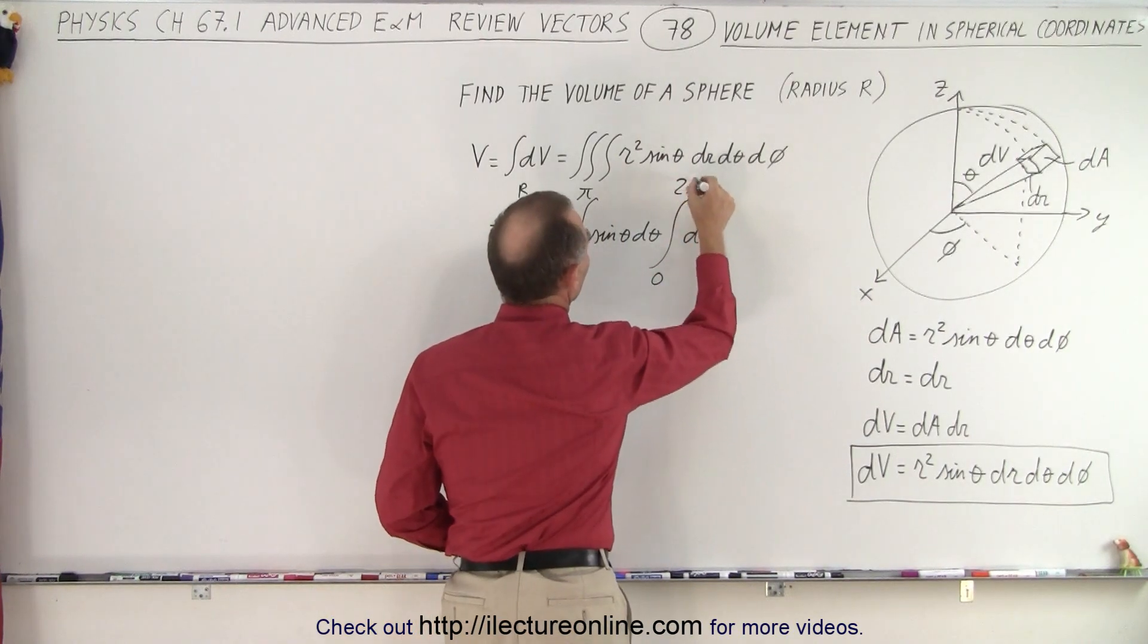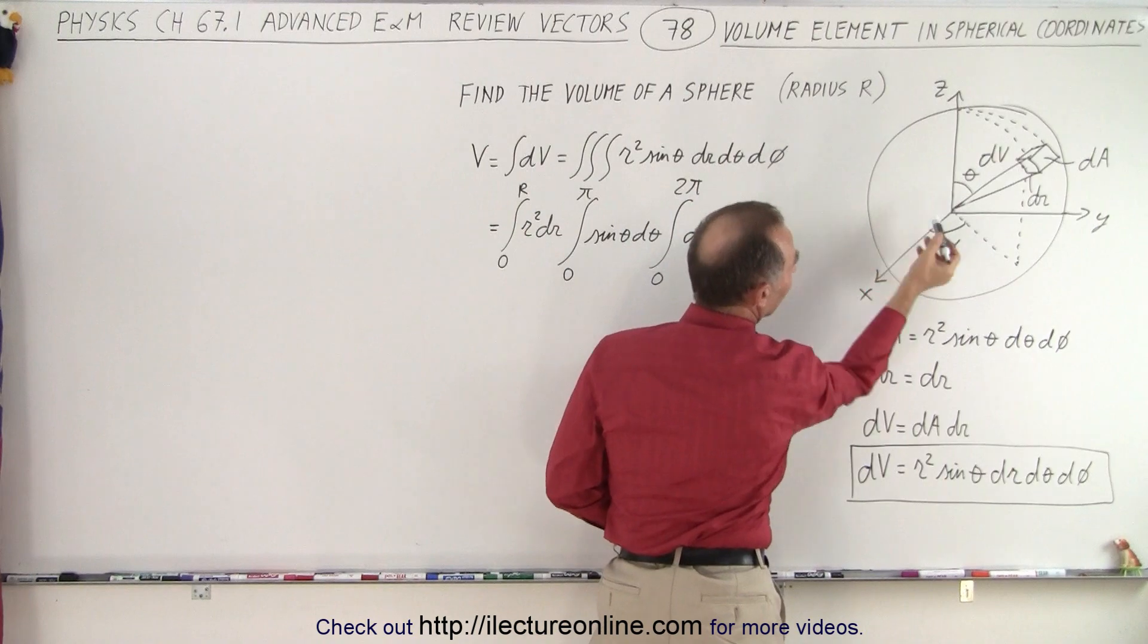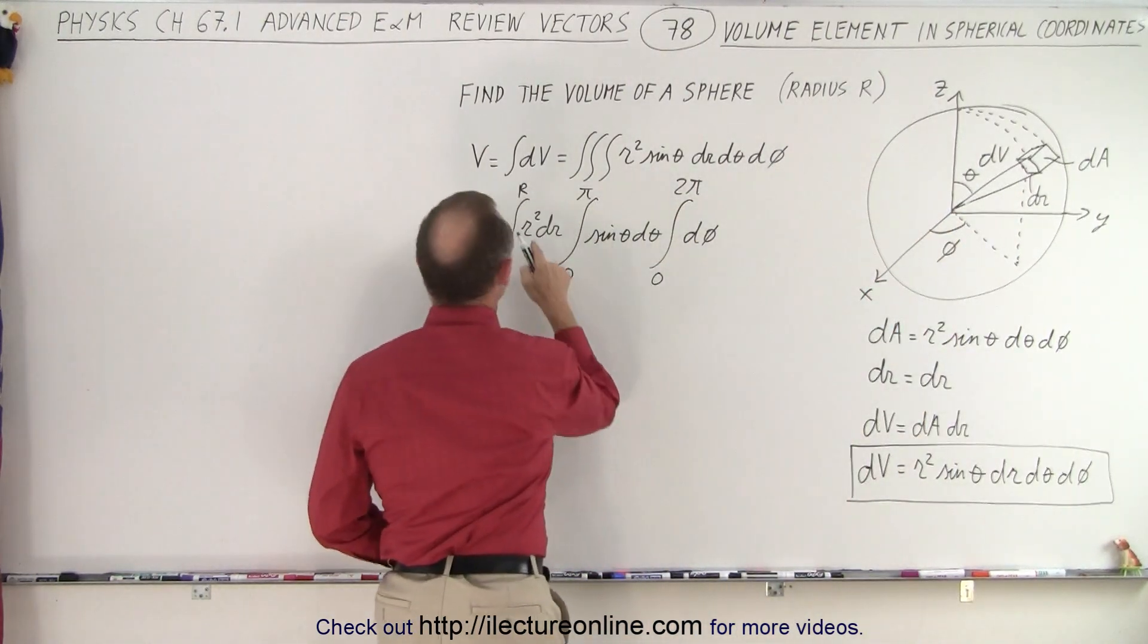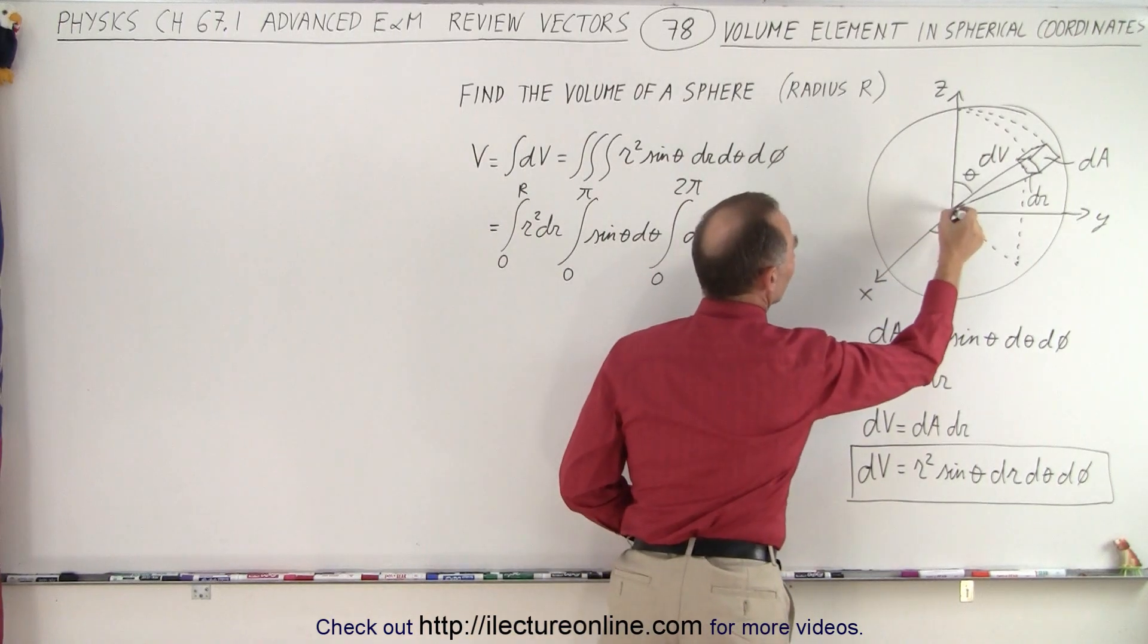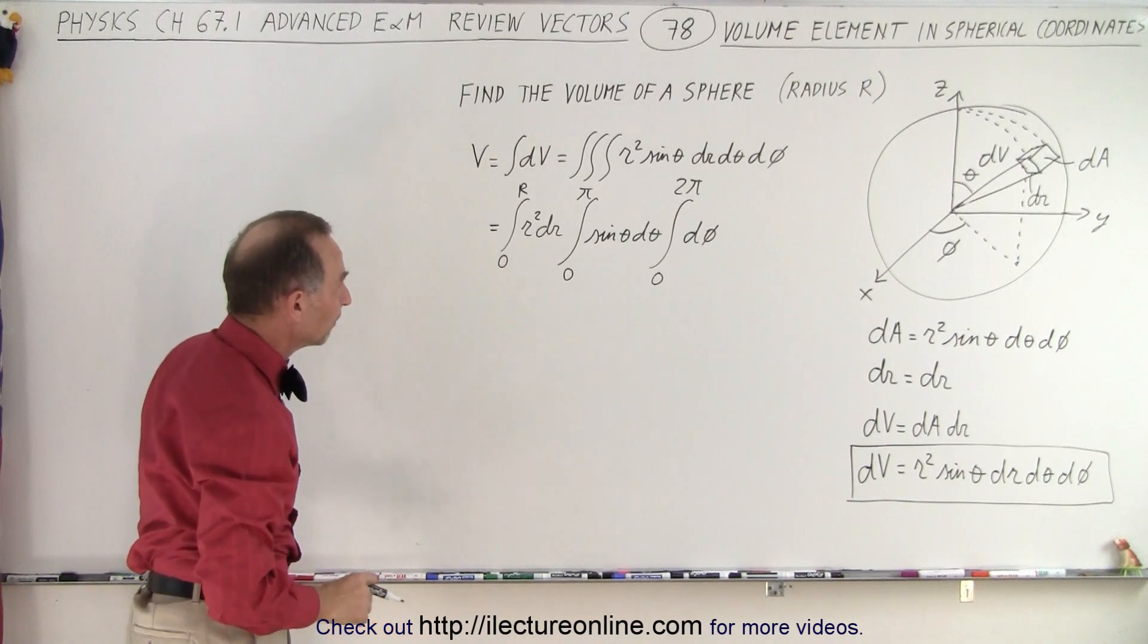So those are the limits. For the phi angle the limits of the theta angle are from zero to 180 degrees. For phi it's all the way around the circle. So 360 degrees. And for r it's from the center of the sphere to the edge of the sphere. So from zero to R. Those are the limits to find the volume.